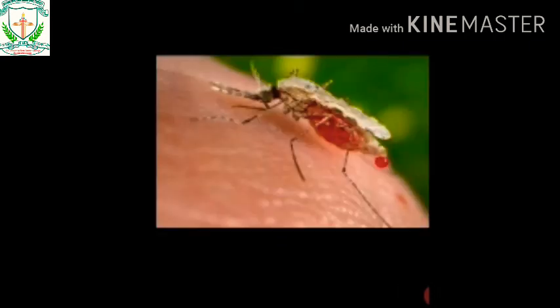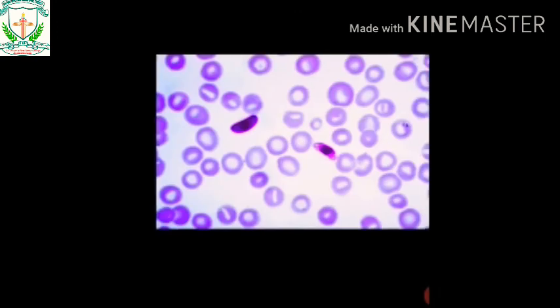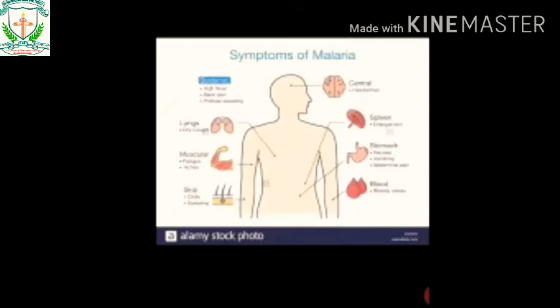Malaria is caused by the bite of the female Anopheles mosquito. This mosquito injects the plasmodium parasite into the human blood, causing malaria. Symptoms include high fever, back pain, profuse sweating, dry cough, and severe fatigue and muscle ache.